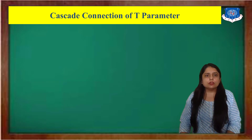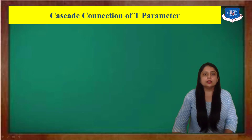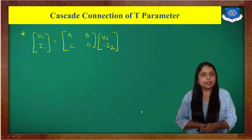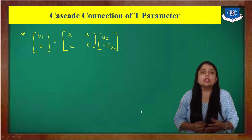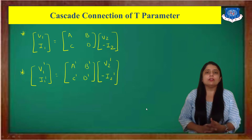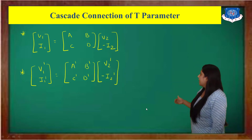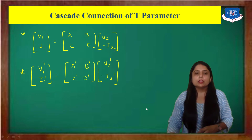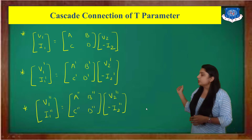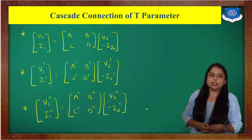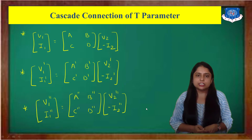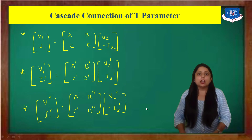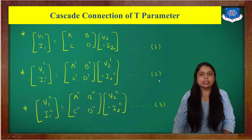Now, the overall T-parameter equation is: [V1, I1] = [A, B; C, D] × [V2, -I2]. Similarly for network N-dash: [V1-dash, I1-dash] = [A-dash, B-dash; C-dash, D-dash] × [V2-dash, -I2-dash]. And for network N-double-dash: [V1-double-dash, I1-double-dash] = [A-double-dash, B-double-dash; C-double-dash, D-double-dash] × [V2-double-dash, -I2-double-dash]. These are equations 1, 2, and 3.